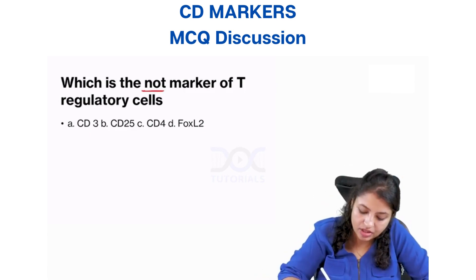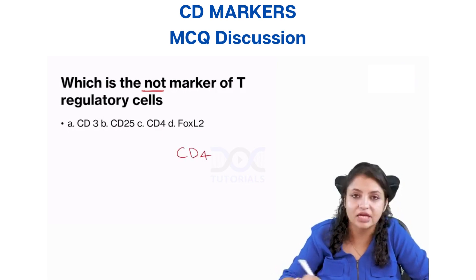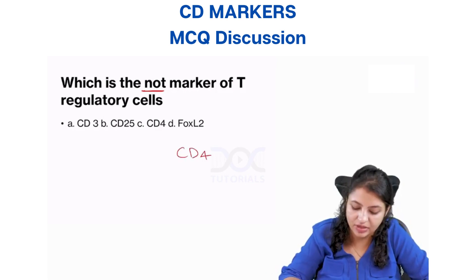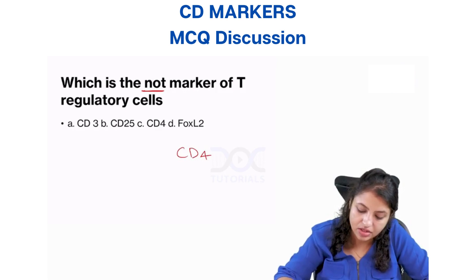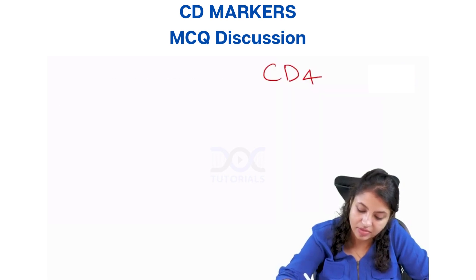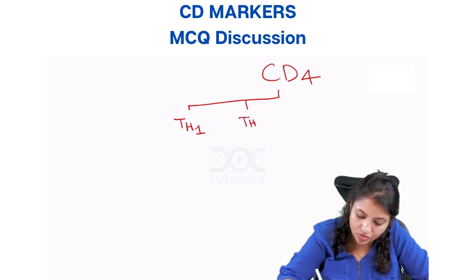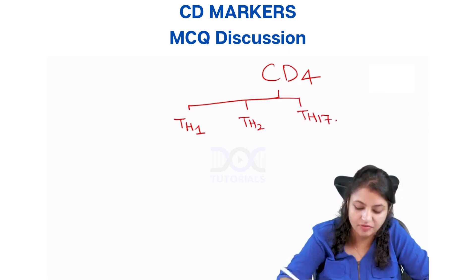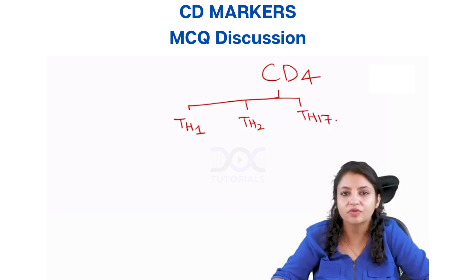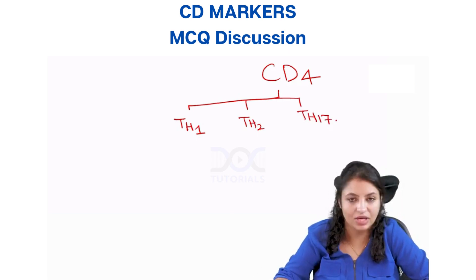So remember, if I talk about CD4 cells, that is helper T cells. So whenever we have helper T cells, these helper T cells will quickly divide themselves into T helper 1, T helper 2, and T helper 17. Whenever the need arises from the immunity, we have T helper 1 cells.